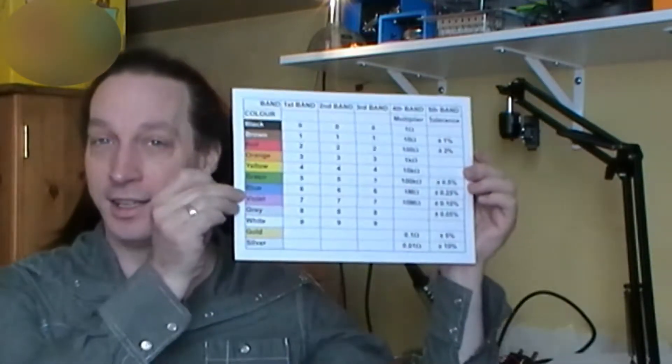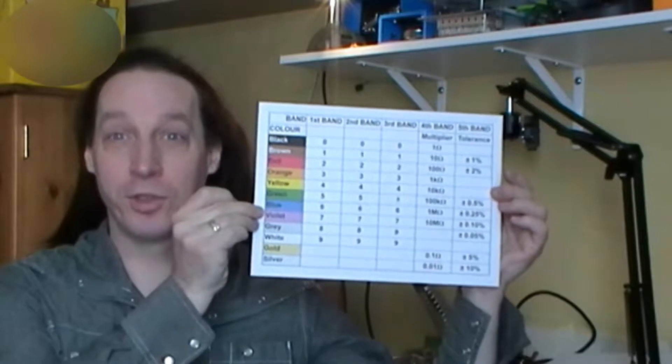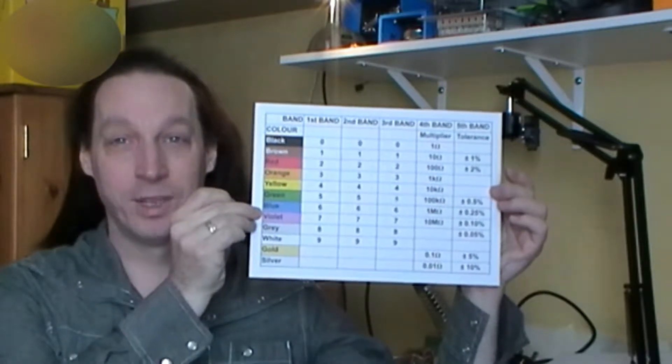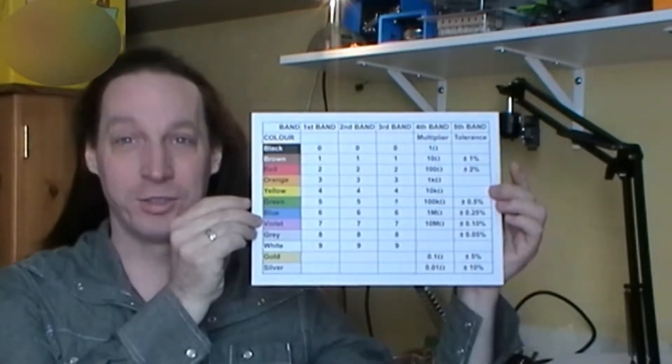So what have I got today? The rainbow of truth. Well actually it's just a resistor colour code chart.